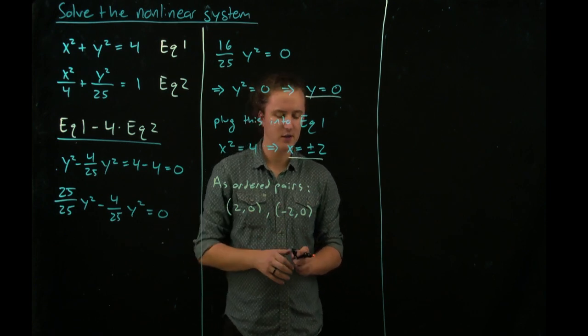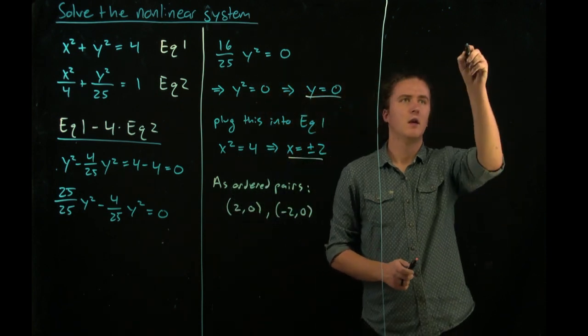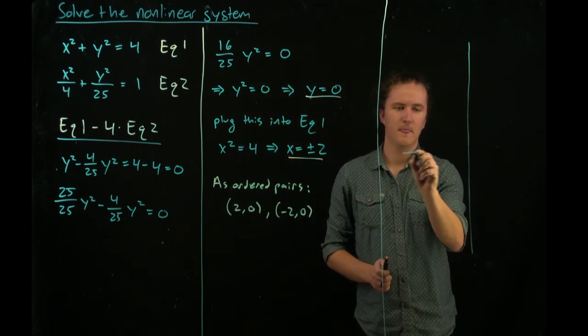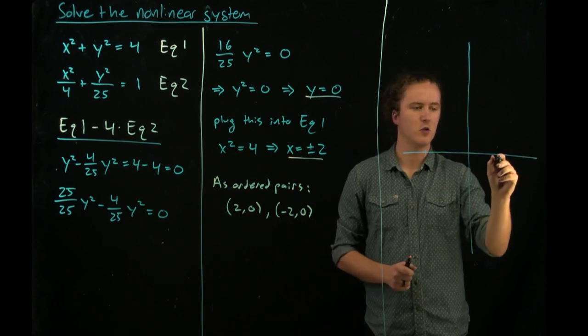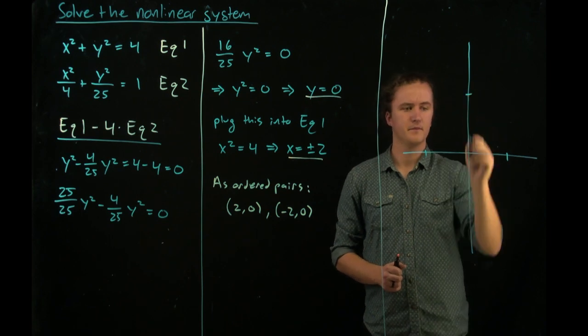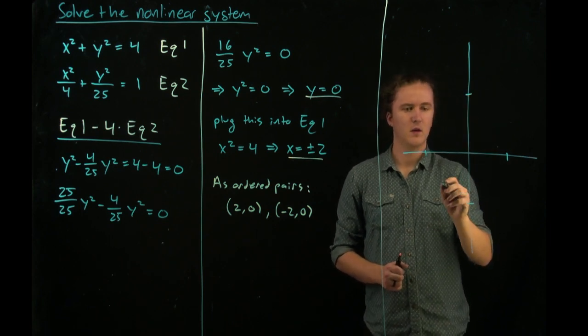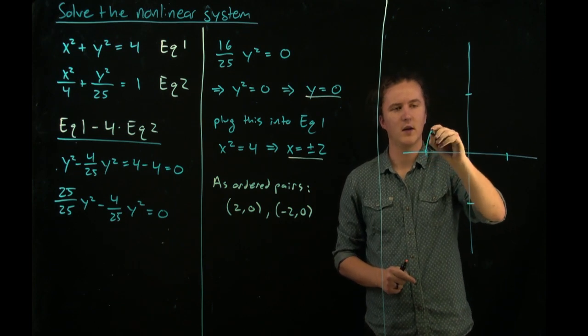To see graphically why there are two equations, let's move to this panel here. As stated before, equation 1 is a circle with radius 4. So let's assume that these tick marks are one unit or four units.